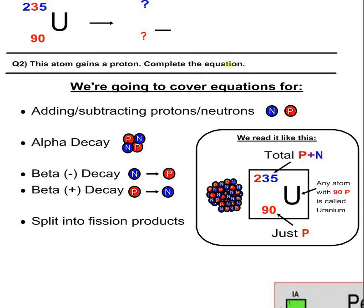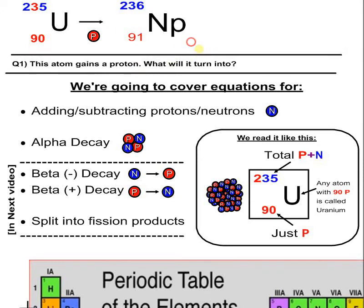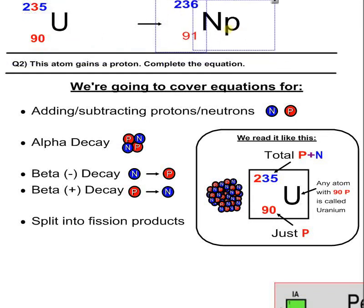Question two is a little bit different because it says complete the equation. I've got to be more professional this time and actually do an equation rather than just say it becomes this. Because if I go back, 90 and 91 don't really add up — an equation means the stuff on the left has to equal the stuff on the right. I'm going to paste that in because that's what we just did.